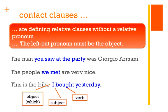'The man you saw at the party was George Armani.' 'The people we met are very nice.' 'This is the bike I bought yesterday.' Contact clauses. Remember there is no comma with the defining relative clause, and contact clauses are, by definition, defining relative clauses.